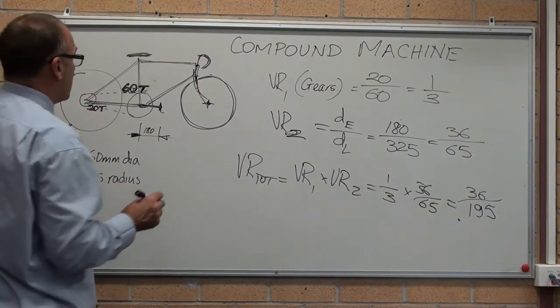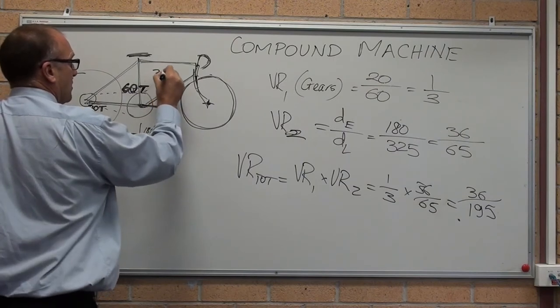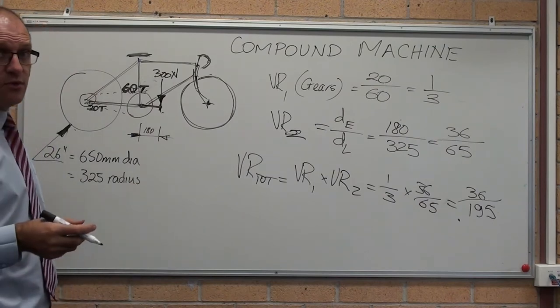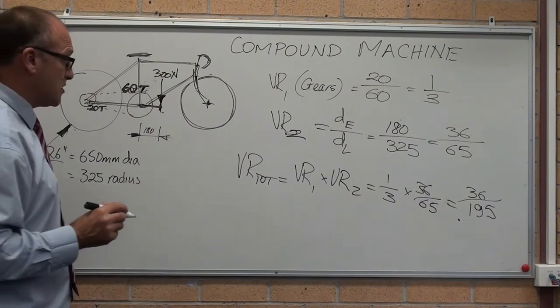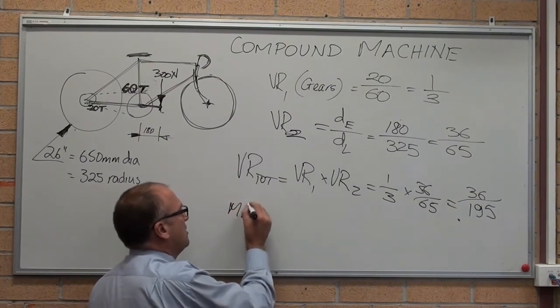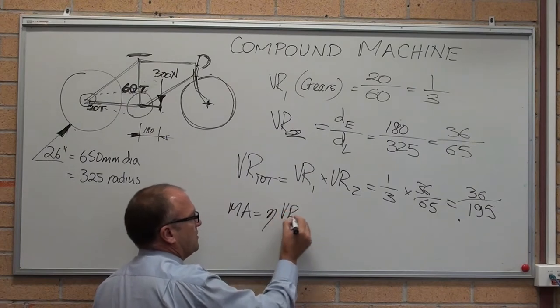What that means there, if I put 300 newtons force down on this, on the pedal, if I put 30 kilograms of force, 300 newtons is not unreasonable. And assuming 100% efficiency, mechanical advantage equals efficiency times velocity ratio.